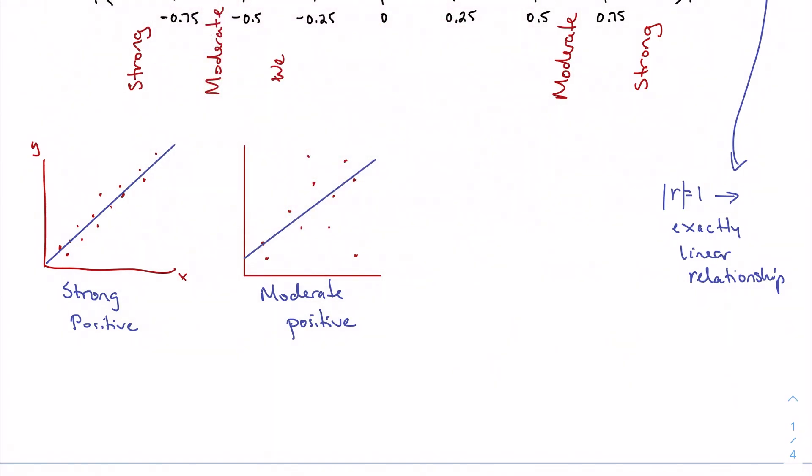Then I have weak if I'm between 0.25 and 0.5, and very weak if I'm between 0 and 0.25. Of course this is mirrored on the positive side as well. What is weak correlation going to look like? Maybe I'll try to do a negative one this time.